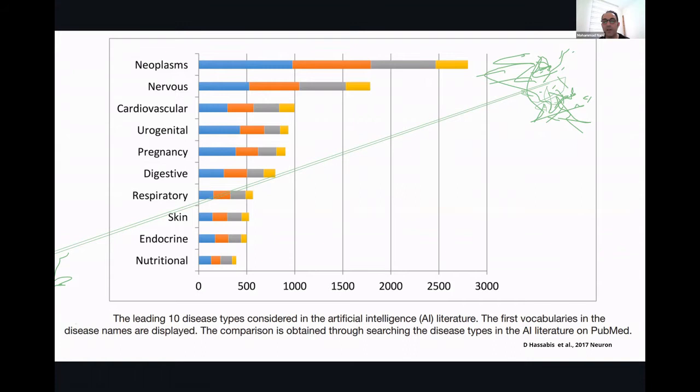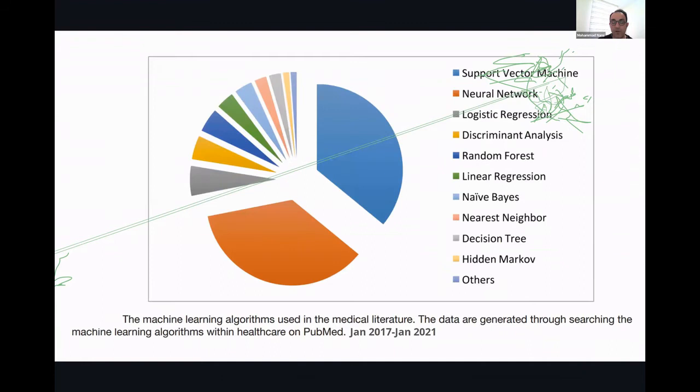On the next level, we'll see cardiovascular, urogenital, pregnancy, digestive, respiratory, skin, endocrine, and nutritional research and clinical care service provisions following the main two very predominant areas of research in that field.